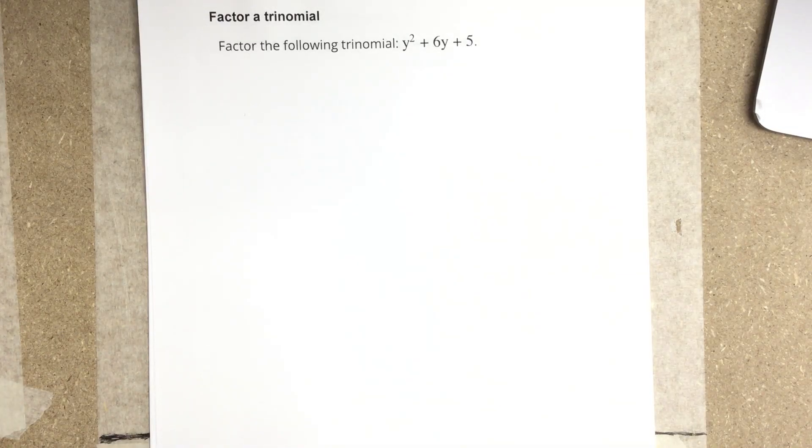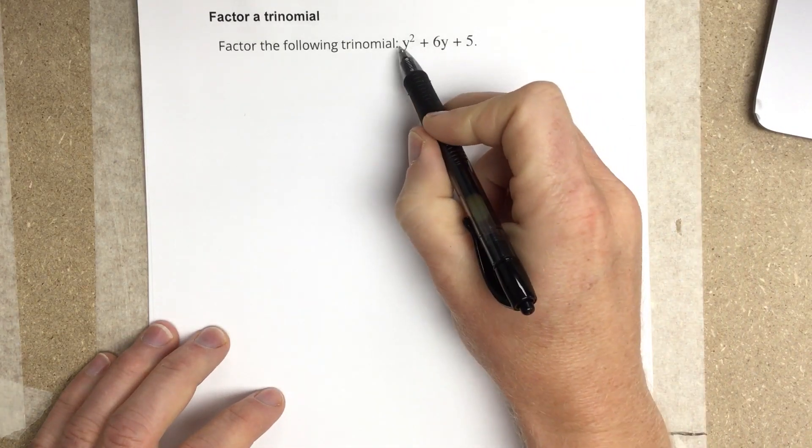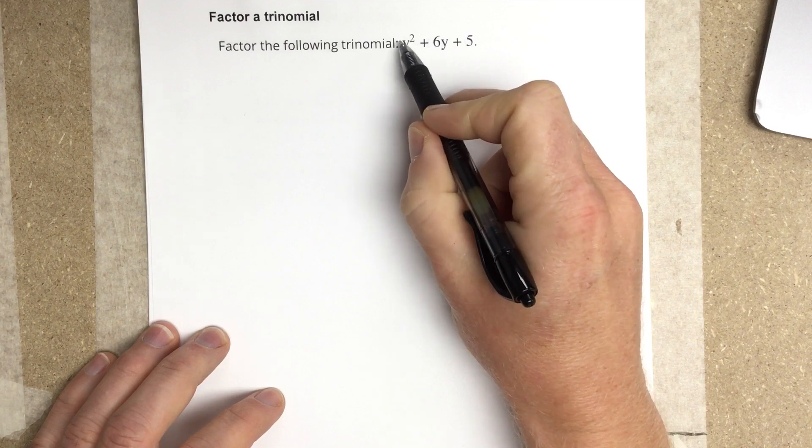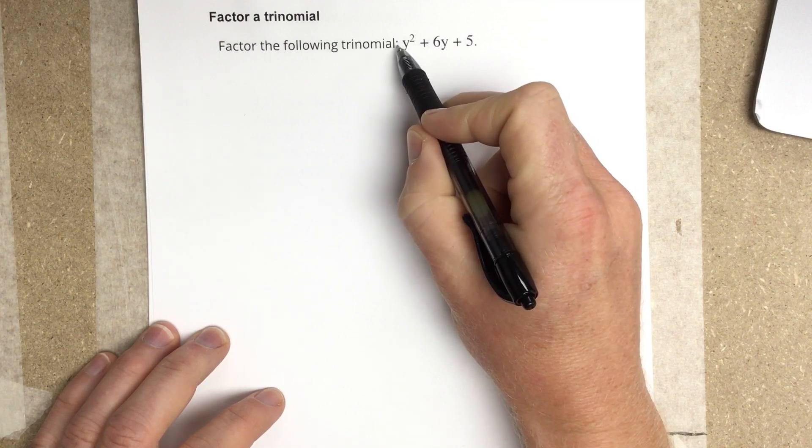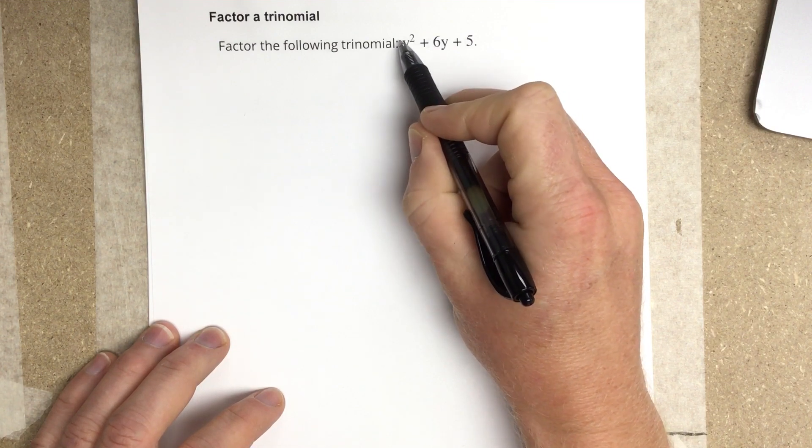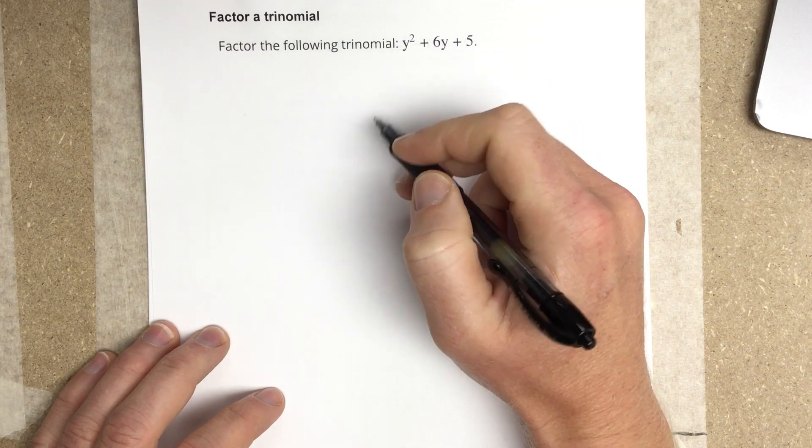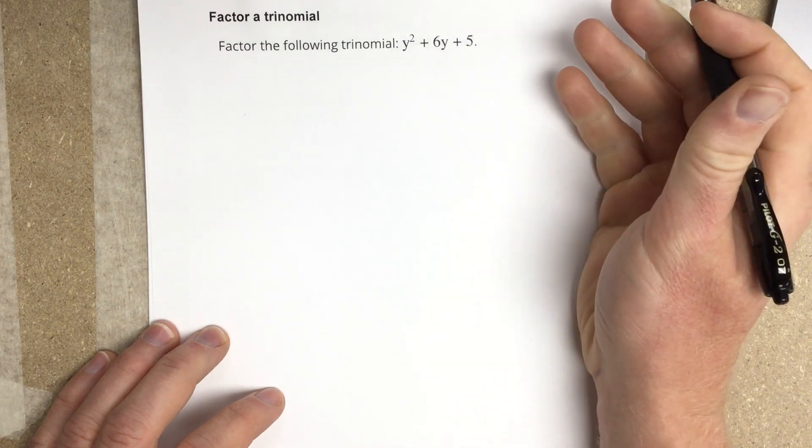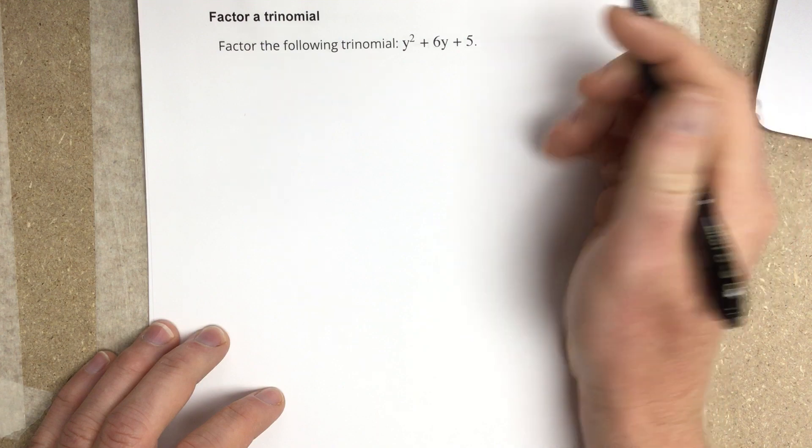In this video, we're going to factor a trinomial. The first thing you want to do is look to see if you have a leading coefficient. If you have a leading coefficient, you're probably going to use factor by grouping. If you do not have a leading coefficient, your leading coefficient is 1, then you can just factor this the easy route.